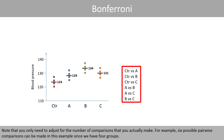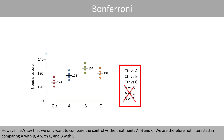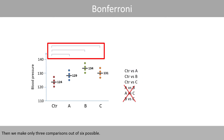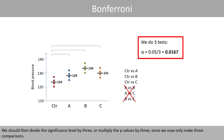Note that you only need to adjust for the number of comparisons that you actually make. For example, six possible pairwise comparisons can be made when we have four groups. However, if we only want to compare the control group versus treatments A, B, and C, and we are not interested in comparing A with B, A with C, and B with C, then we make only three comparisons out of six possible. We should then divide the significance level by three, or multiply the p-values by three, since we now only make three comparisons.